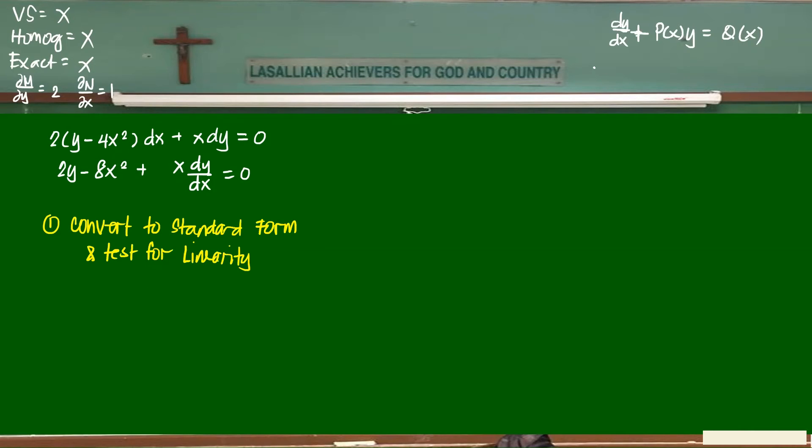And then what is the solution? Y·e^(∫P(x)dx) = ∫Q(x)·e^(∫P(x)dx) dx + C, right? So that means this one, we have to rewrite this. So plus 2/X·y = 8X. So I divided everything by X and then moved them around.